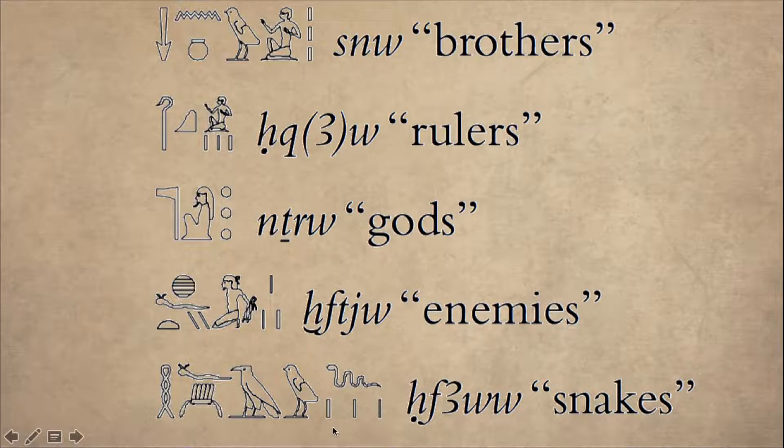But when you see three strikes, it means that whatever word you have to read, you need to add a sound ooo at the end because it's a plural. So this here is a senu. So you read it senu.